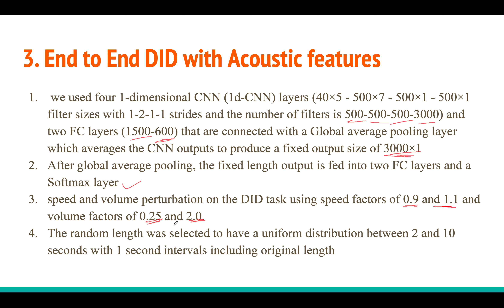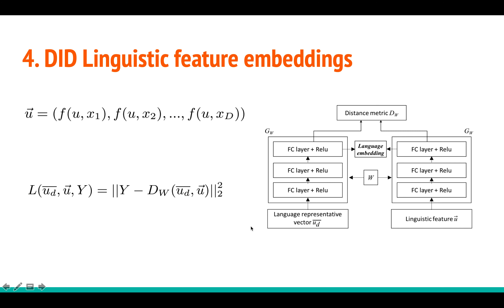They also tried random segmentation as another augmentation technique. These augmentations increase the amount of training data to prevent overfitting, since the dataset they have is relatively small. With all these augmentations the model is less likely to overfit.